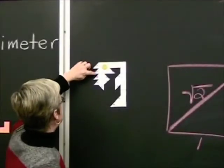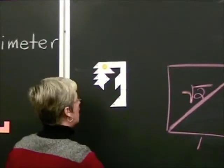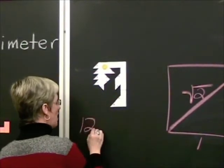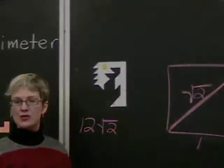I have 1, 2, 3, 4, 5, 6, 7, 8, 9, 10, 11, 12. So, I have, on my picture, I have 12 square roots of 2. I want you guys to go ahead and please do that on yours as well.